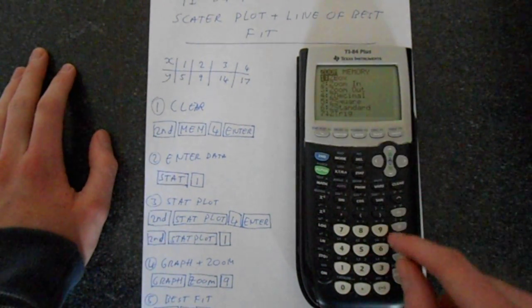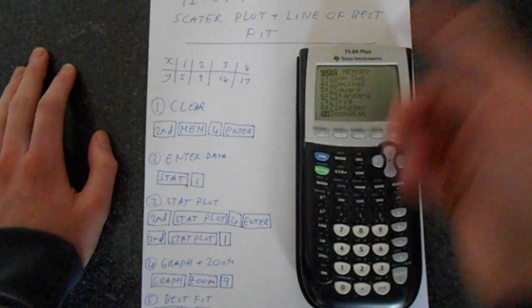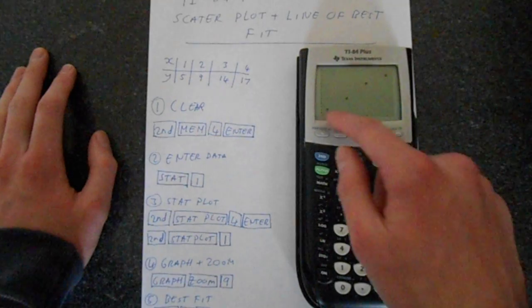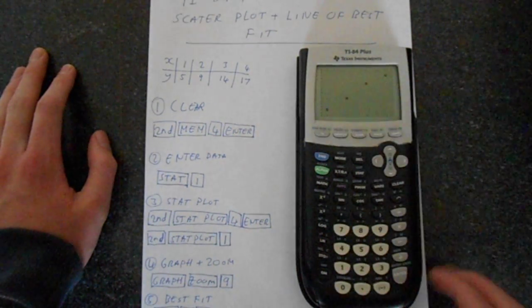This calculator is somewhat strange, it doesn't automatically put it in the right view. So you have to go to zoom, and then if you go down you'll see this zoom stat, and we'll use the stat to plot it. So press 9, and that zooms in correctly. This looks like what we have plotted.